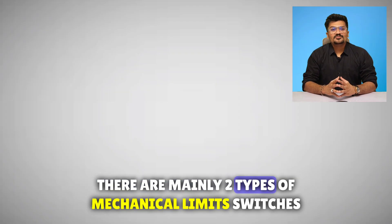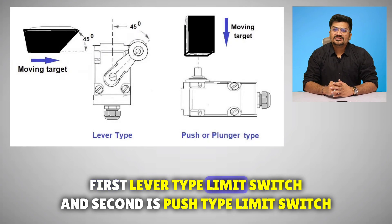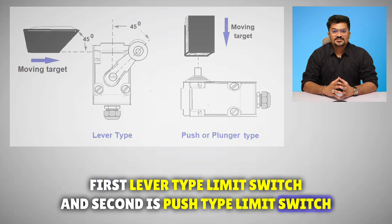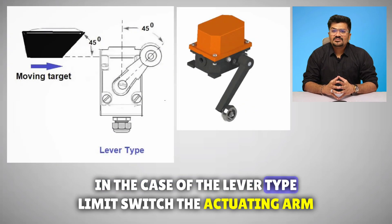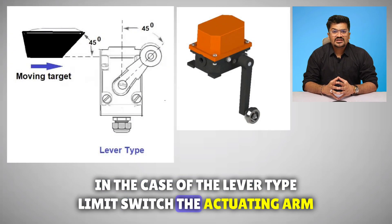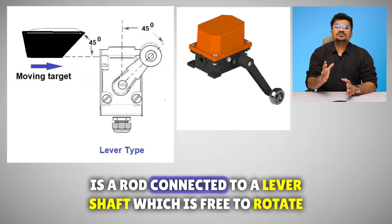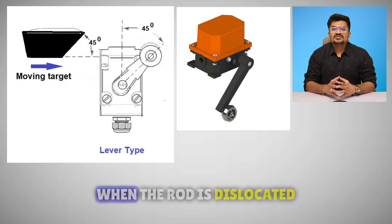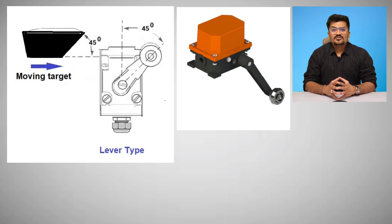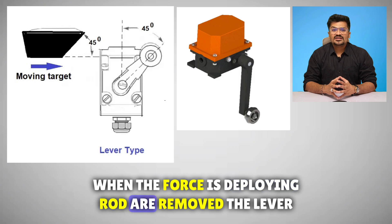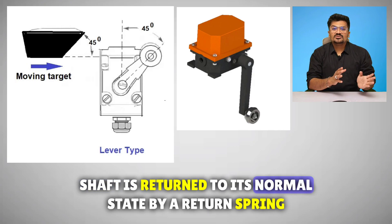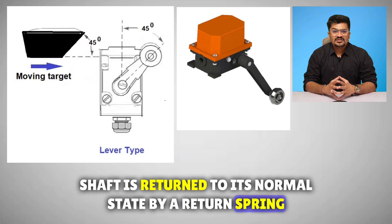There are mainly two types of mechanical limit switches: first, lever type limit switch, and second, push type limit switch. In the case of the lever type limit switch, the actuating arm is a rod connected to a lever shaft which is free to rotate when the rod is displaced. When the forces displacing the rod are removed, the lever shaft is returned to its normal state by a return spring.